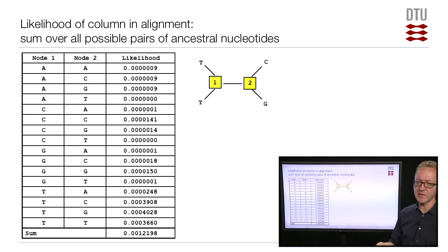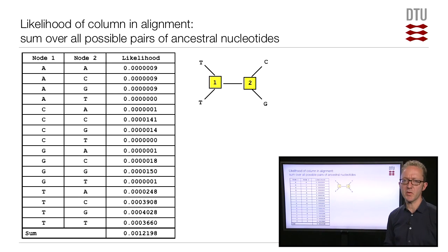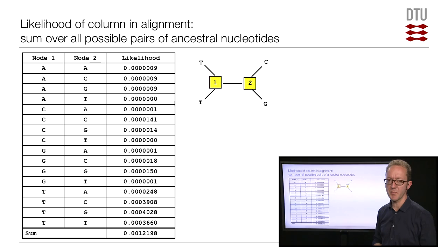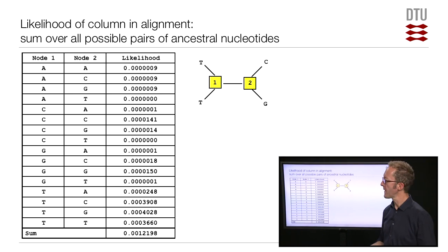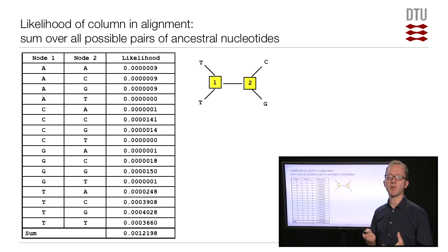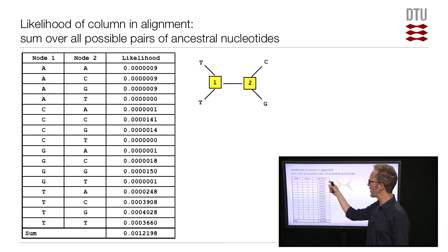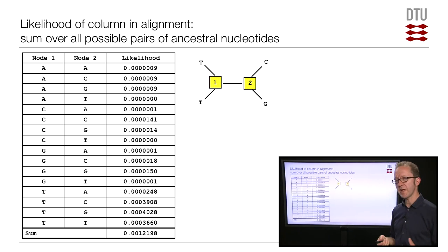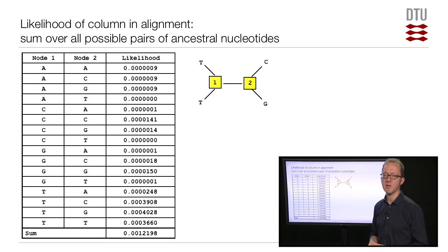We can have A and A, A and C, A and G, etc., up to T and T at these two internal ancestral nodes. For each of these possibilities, we use the recipe from the previous slide to compute the likelihood for the current set of parameter values. As it turns out, this can actually be used to start thinking about what those ancestral sequences were like. For any given pair of ancestral nucleotides, we have a likelihood — a quantification of how probable that particular pair of ancestral nucleotides were.